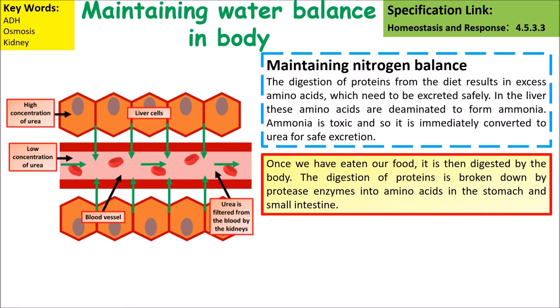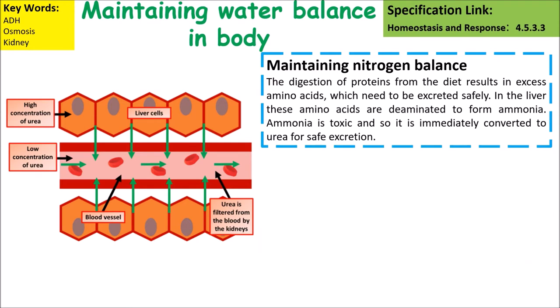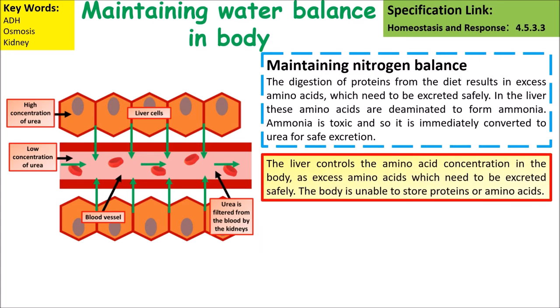Once we have eaten our food it is digested by the body. Proteins are broken down by protease enzymes into amino acids in the stomach and small intestines. When excessive amounts of protein are eaten, the excess amino acids from digestion are transported to the liver from the small intestines. The liver controls the amino acid concentration in the body, as excess amino acids need to be excreted safely.